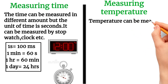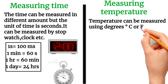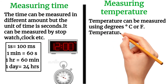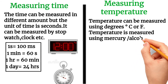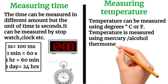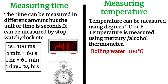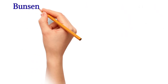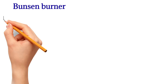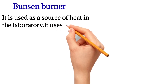Temperature can be measured using degree Celsius or Fahrenheit. Temperature is measured by a thermometer — either a mercury thermometer or an alcohol thermometer. The boiling point of water is 100 degrees Celsius. This picture represents a thermometer.